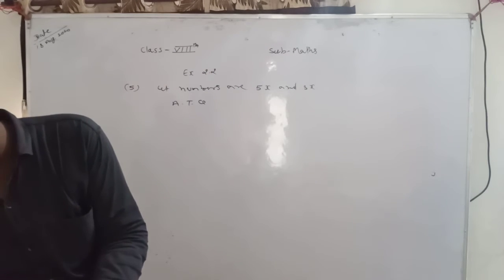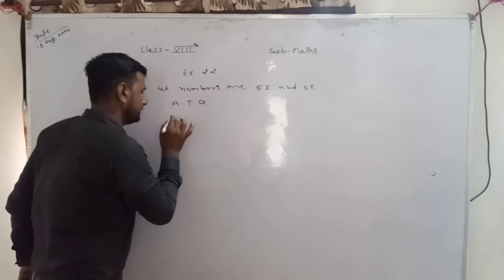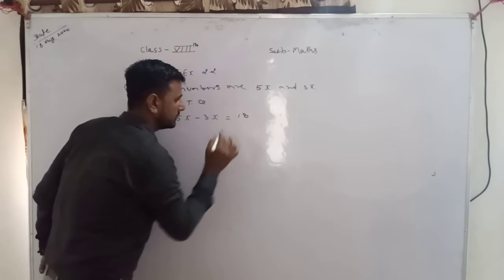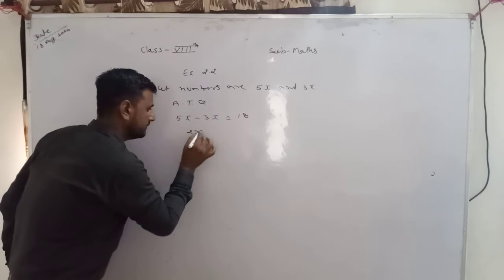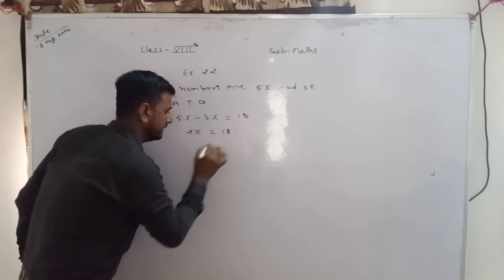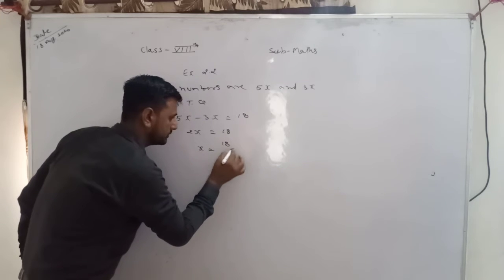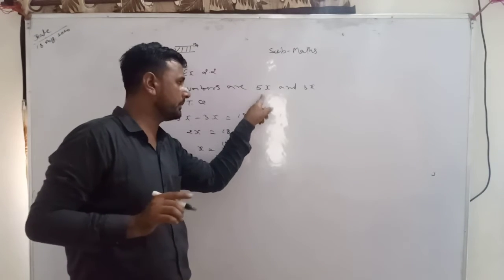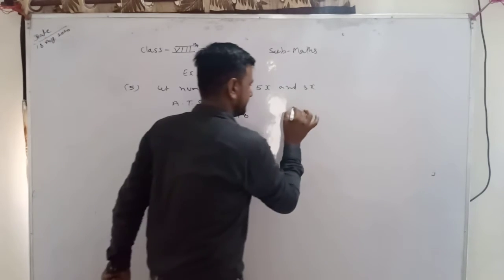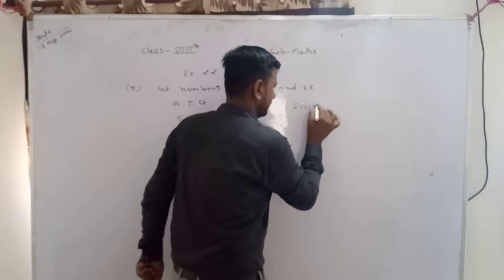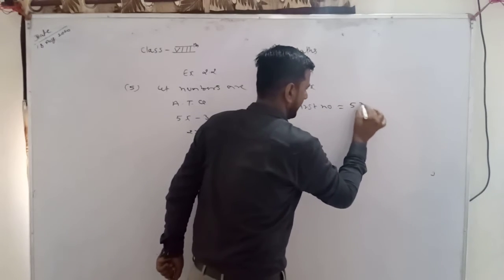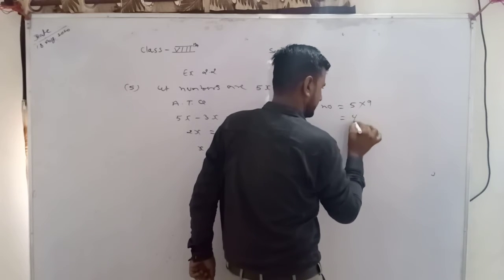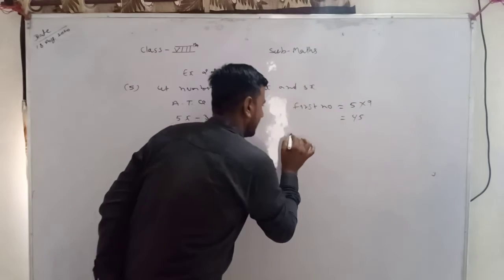According to question, दोनों number का जो difference है वो 18 है। तो difference मतलब: 5x minus 3x is equal to 18। तो 2x is equal to 18, x is equal to 9। अब अपने को number find करने हैं। First number अपने पास 5x है: 5 into 9 = 45। तो first number आएगा 45।